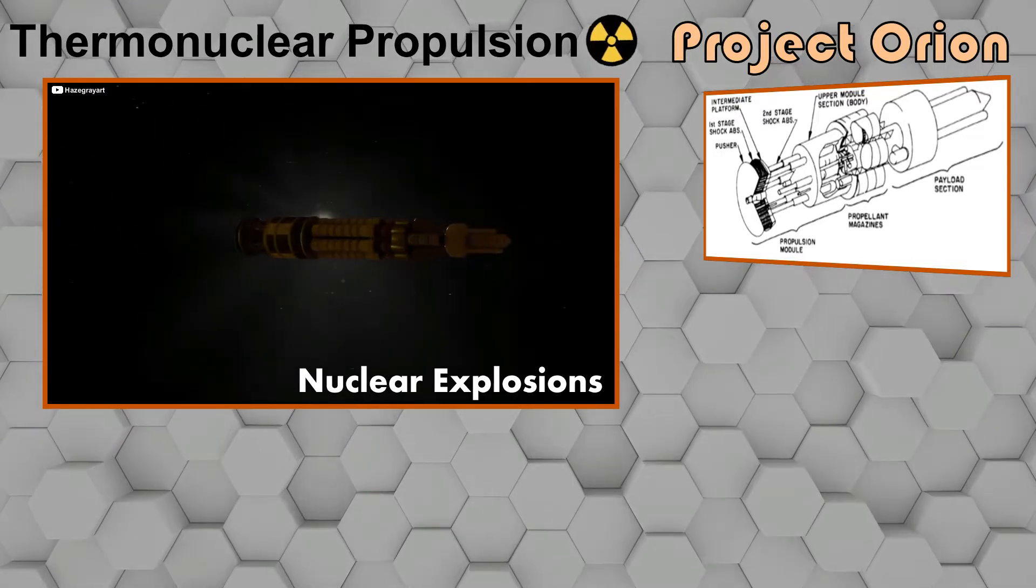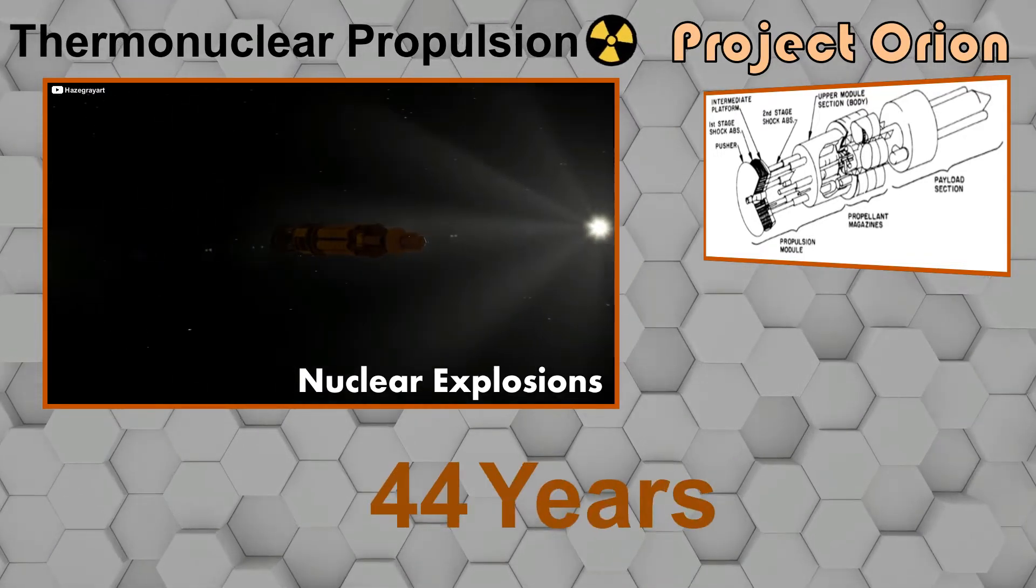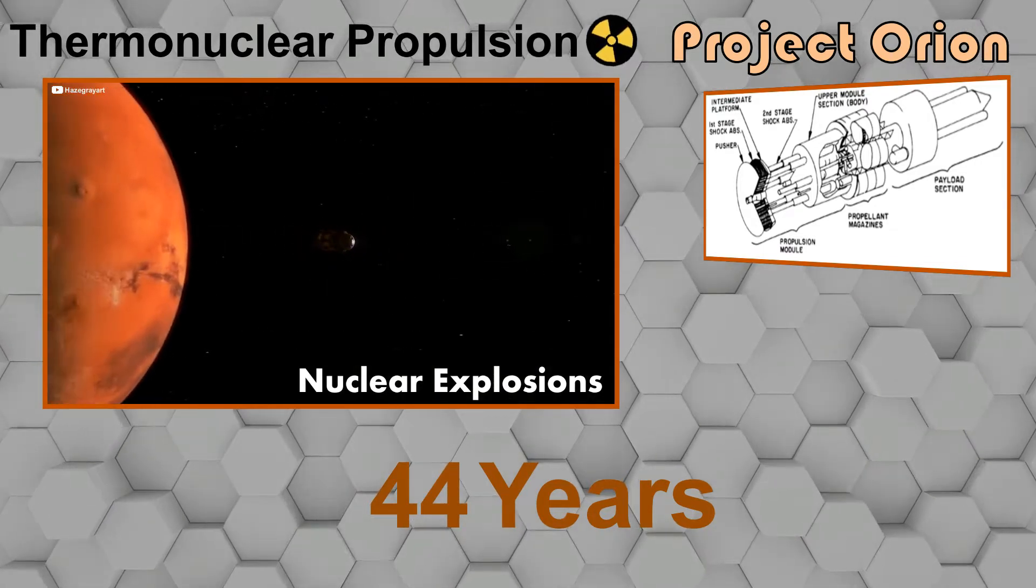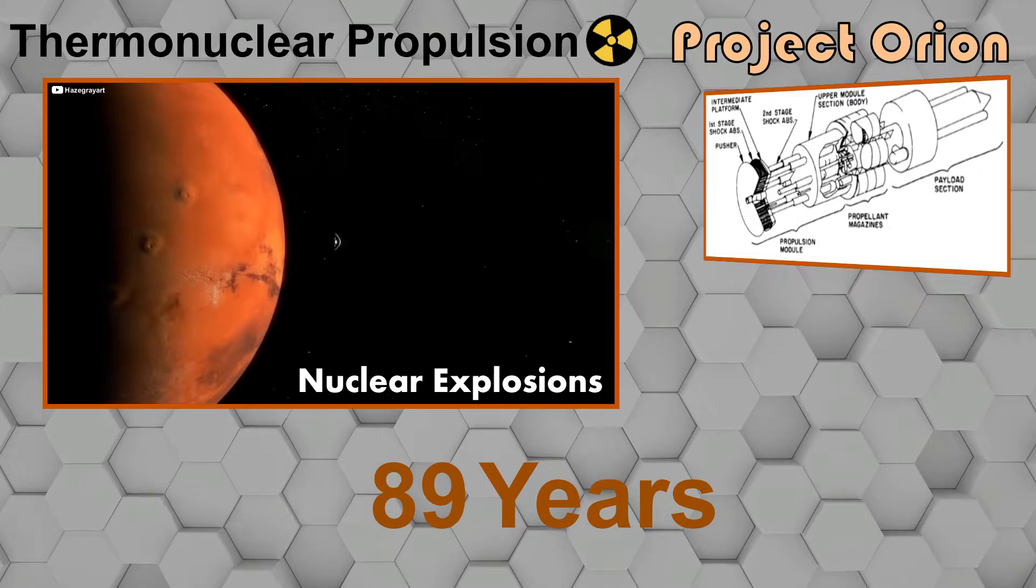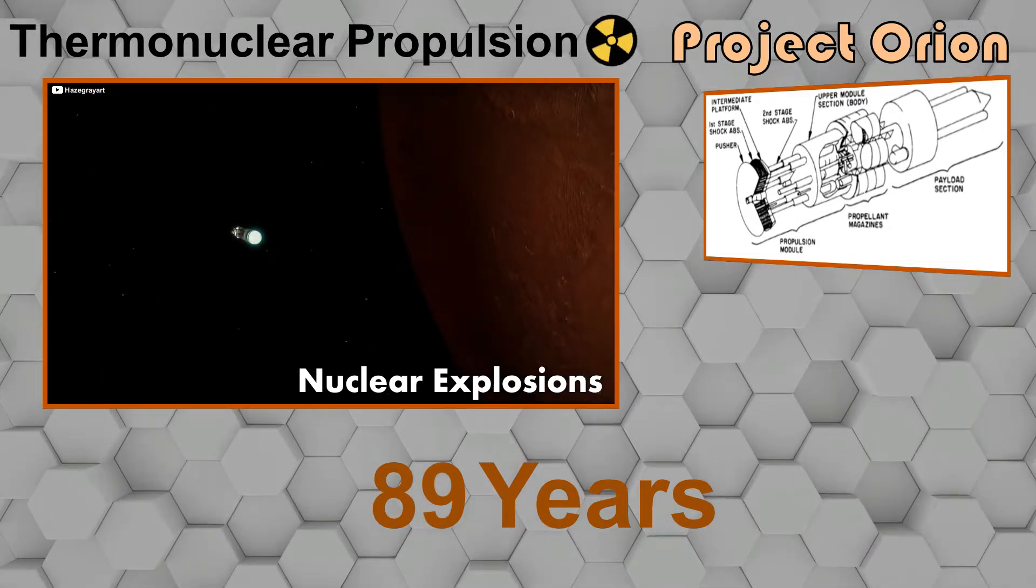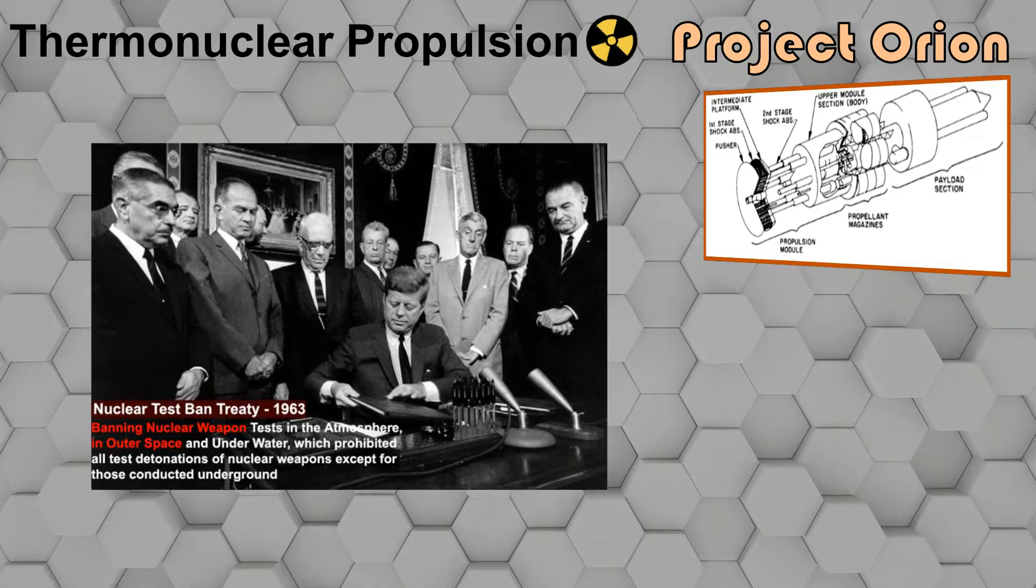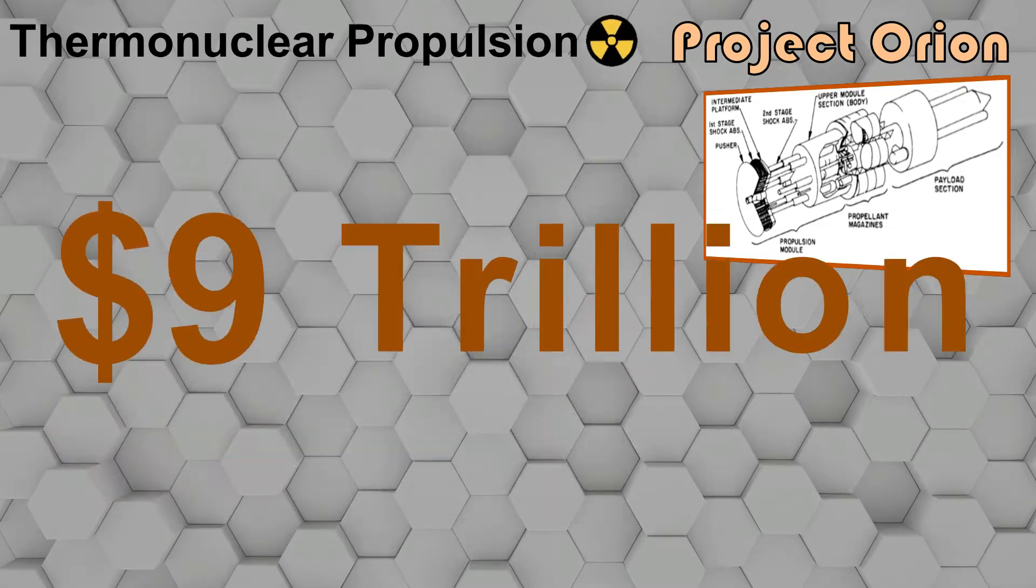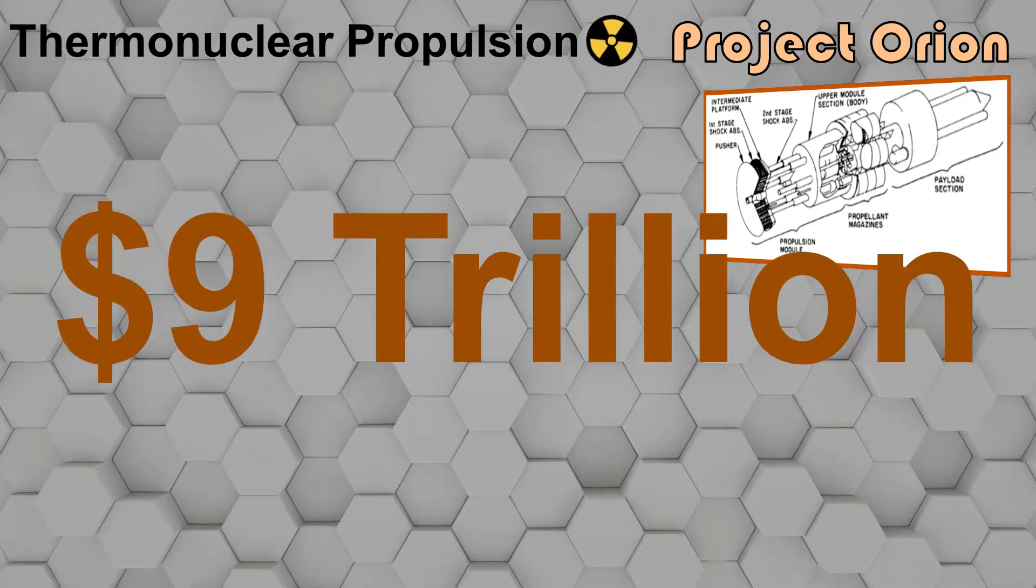If we achieve this we can reach Proxima b in 44 years, but we also need to slow down at the other end, so we need to save half of the fuel, which increases our travel time to 89 years. The Project Orion was eventually abandoned, majorly due to the Peace Treaty of 1963 banning nuclear explosion in space. And now it would cost us more than 9 trillion dollars to complete this project.